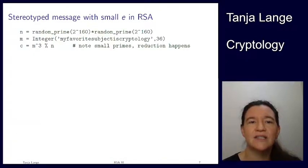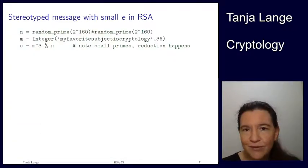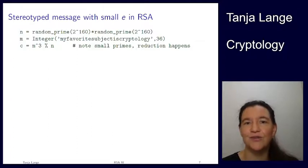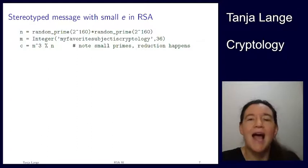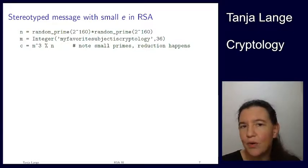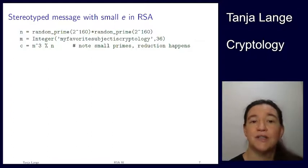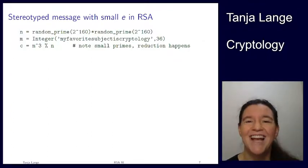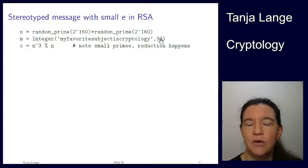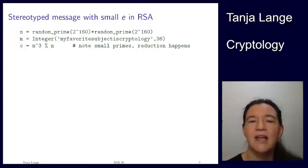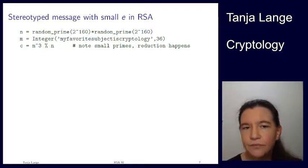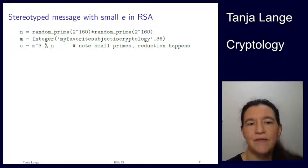You shouldn't use textbook RSA, and certainly not with a very small exponent like e = 3. One thing that can go wrong is that the message is so small there's no reduction. Taking tiny 160-bit primes: my message is 'my favorite subject is cryptology' encoded in base 36 — using the 26 alphabet letters and 10 digits — so every letter and digit is uniquely encoded. The ciphertext is that value cubed.